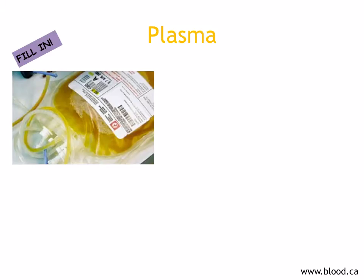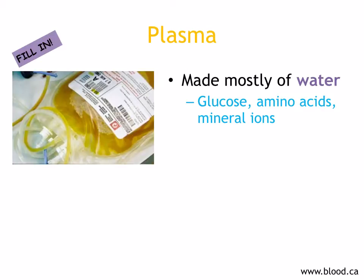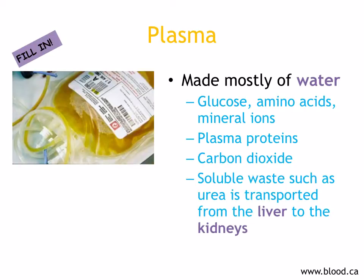Plasma is the liquid part of the blood and it's made mostly of water. Soluble substances are transported in it — for example, glucose, amino acids, and mineral ions. Plasma also contains plasma proteins and carbon dioxide. And it also transports soluble waste, such as urea, which is transported from the liver to the kidneys.